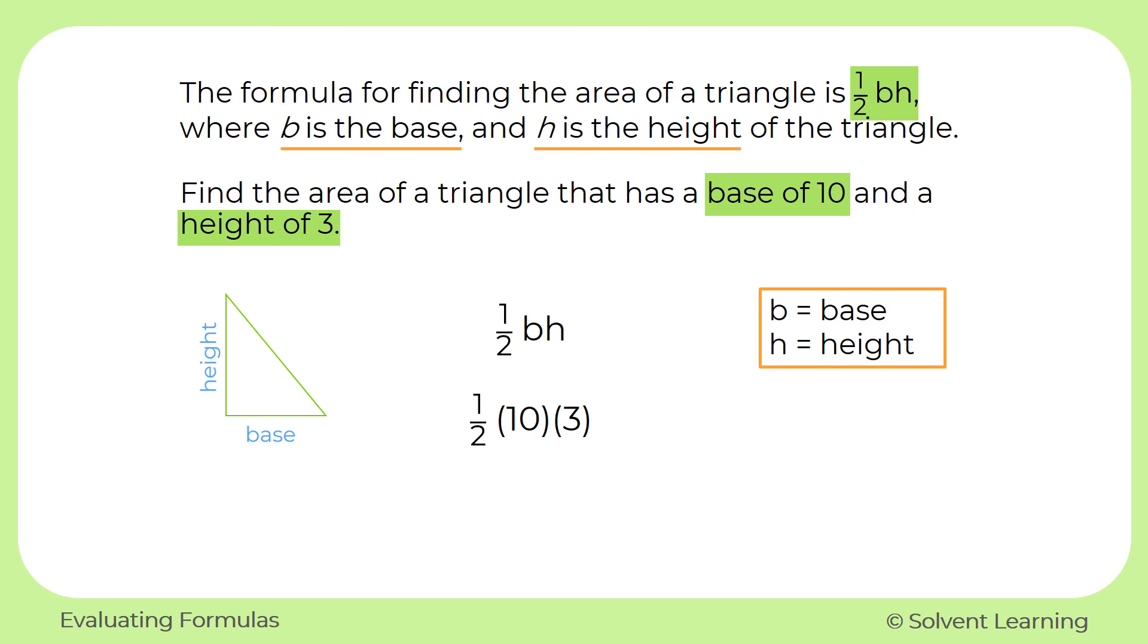And now, since we have an expression that has just numbers in it, we can go ahead and simplify this. So one half times 10 will give us 5, and then 5 times 3 will give us 15 as our final answer.